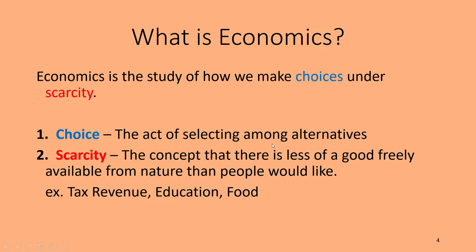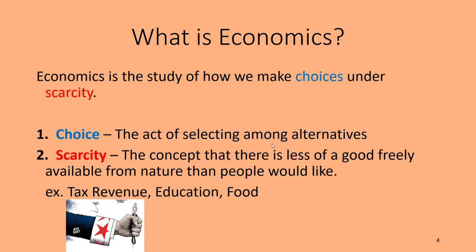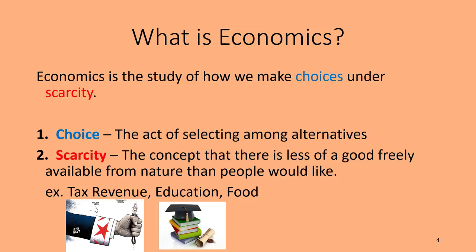To give some examples of other scarce things: tax revenue is scarce. Last year the U.S. federal government collected about $3.46 trillion in tax revenue. While that sounds like a lot, it's still scarce — the government has to make choices about what to do with it: how much to spend on Medicare, Medicaid, Social Security, national defense, or a stimulus package. They spent about $4.4 trillion last year — nearly a trillion more than they took in — adding to our national debt.